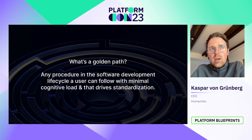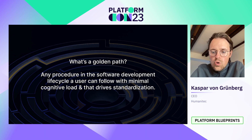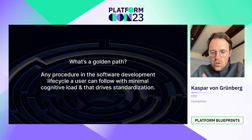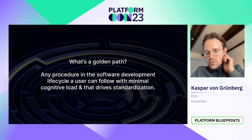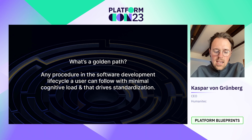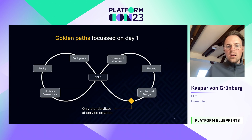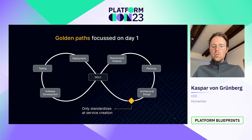If you ask nine out of ten platform engineers today what a golden path is, they will probably say it's the scaffolding workflow that a user would utilize to create a new service or resource. They'd describe going into a portal or the templating function of a version control system, hitting 'use this service,' which calls the GitHub templating API, clones the template, executes it, and you have your new service running. This is the focus on day one.